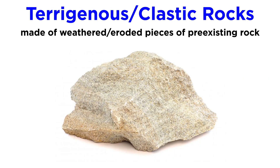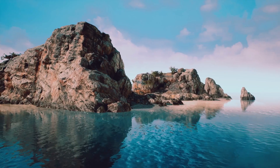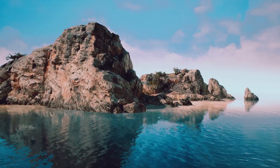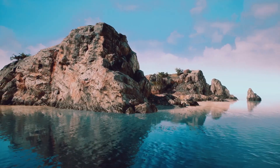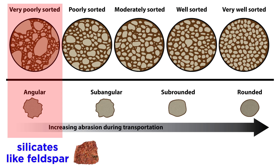Let's now summarize what we've learned about clastic rocks. Sediments that have been transported far from their source over a long period of time will be rich in quartz and clay, well-sorted, and well-rounded. Sandstones that were formed in beach environments are a great example of this, where it is not uncommon to see nearly pure quartz sand.